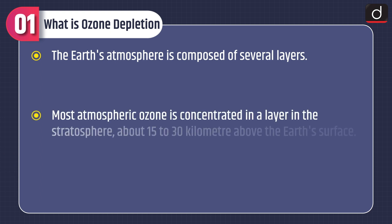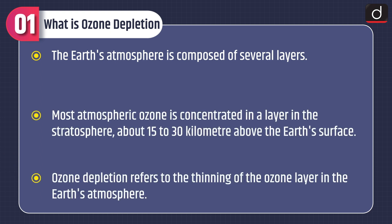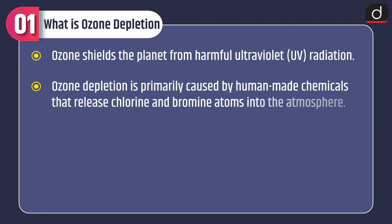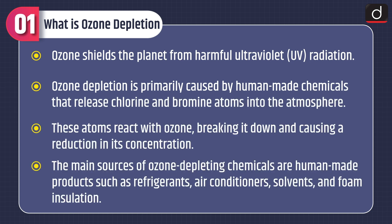Let's discuss what is ozone depletion. The earth's atmosphere is composed of several layers. Most atmospheric ozone is concentrated in a layer in the stratosphere about 15 to 30 km above the earth's surface. Ozone depletion refers to the thinning of the ozone layer in the earth's atmosphere. Ozone shields the planet from harmful ultraviolet (UV) radiation. Ozone depletion is primarily caused by human-made chemicals that release chlorine and bromine atoms into the atmosphere, which react with ozone, breaking it down and causing a reduction in its concentration.